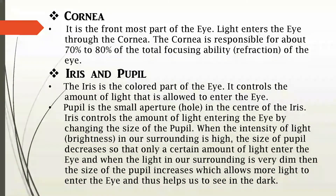The cornea is the clear front surface of the eye. It is composed of proteins and cells. It does not contain blood vessels, unlike most of the tissues in the human body. About 70-80% of focusing of light rays is achieved by the cornea.